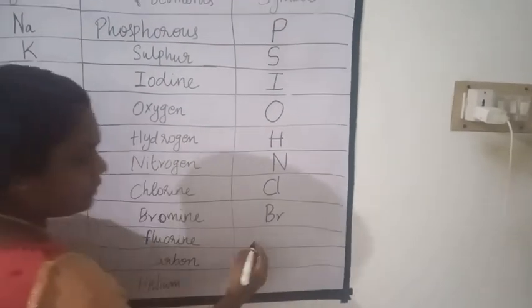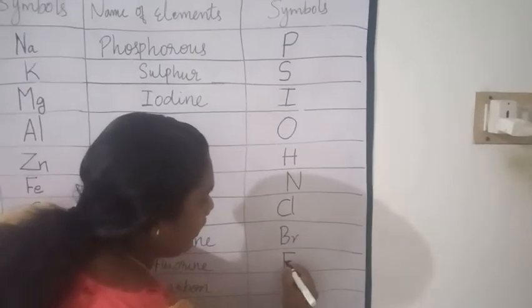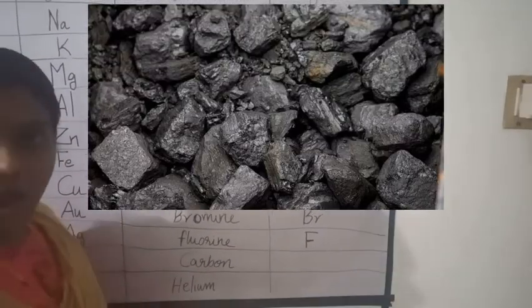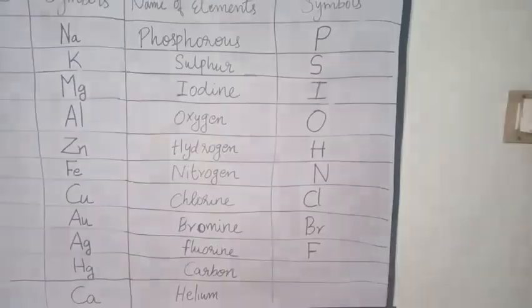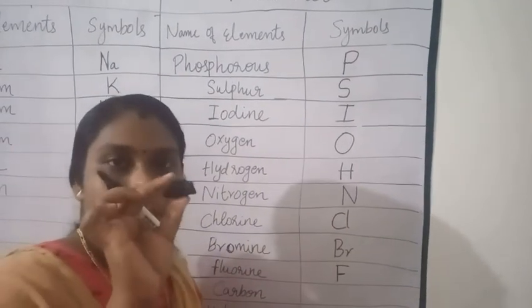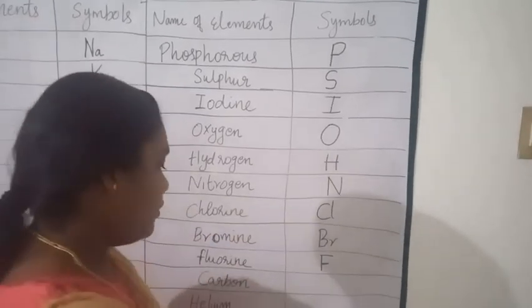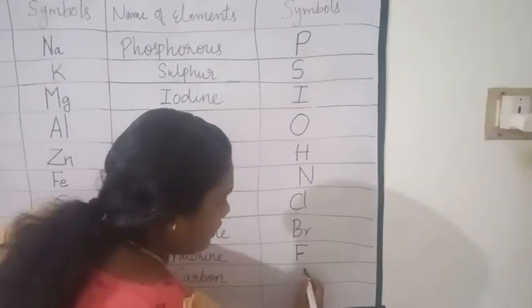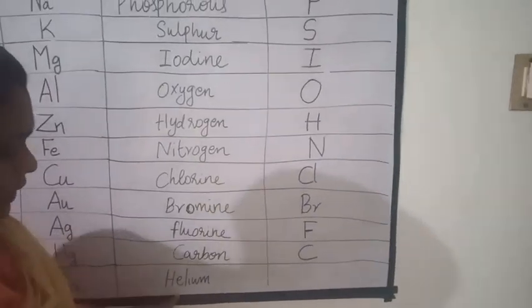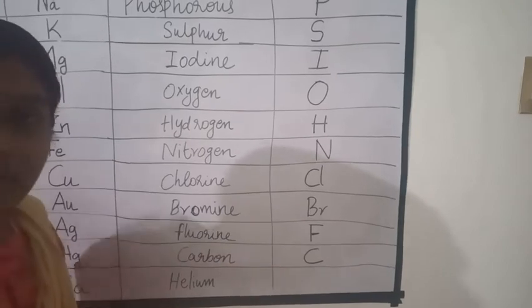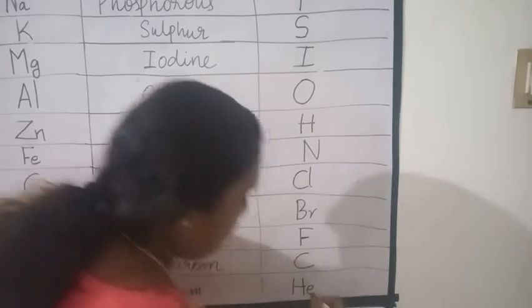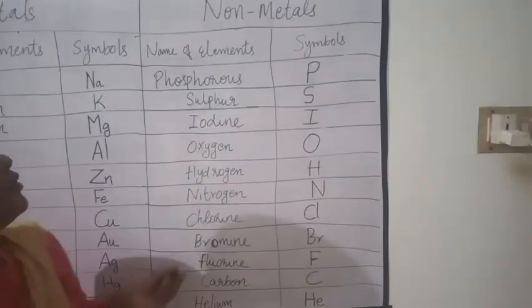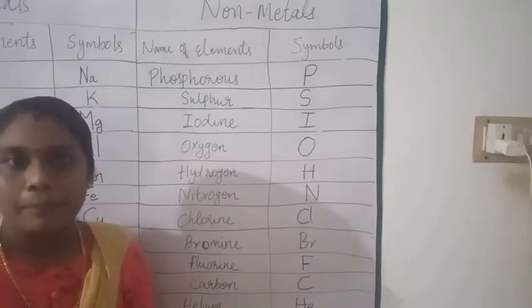Fluorine — the symbol of fluorine is capital F. The next one is carbon — see this wood charcoal, this is made up of carbon, so the symbol of carbon is C. The next one is helium — the symbol of helium is He. These are a few examples of non-metals.